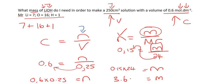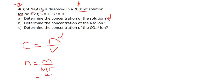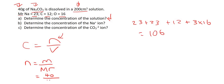The units of mass are grams. They tell us 40 grams of sodium carbonate is dissolved in a 200 cm³ solution — determine the concentration. C = n/V; we have the volume and need the moles. Using n = m/Mr: mass is 40, and the molar mass of Na₂CO₃ is 23 + 23 + 12 + 3×16 = 106. So moles = 40 ÷ 106 = 0.38 moles.